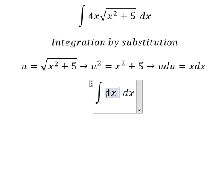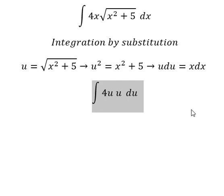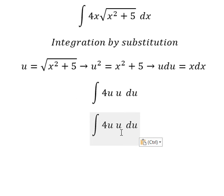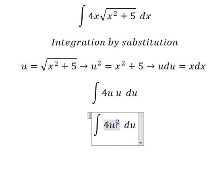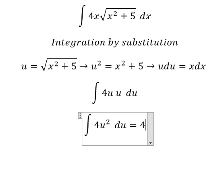We change x dx to u du. So u and u, we have u squared. The integration of u squared we have u to the power of 3 over 3.